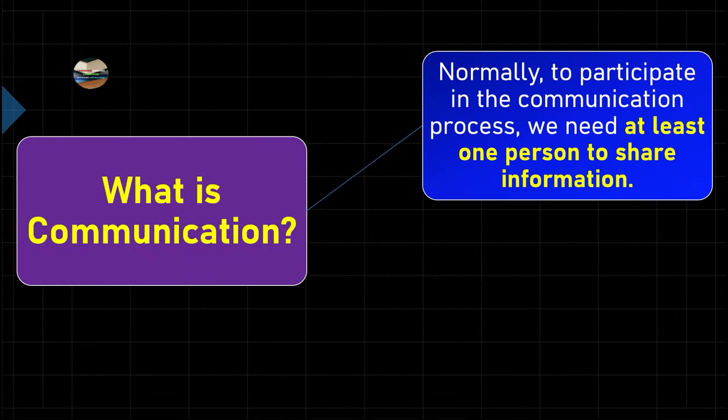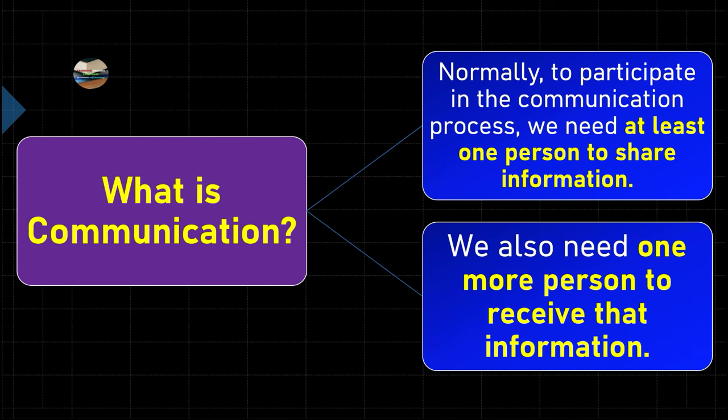To participate in the communication process, we need at least one person to share information and at least one more person to receive that information. So for communication to be successful, we need two persons: one to impart the information and one to receive it.